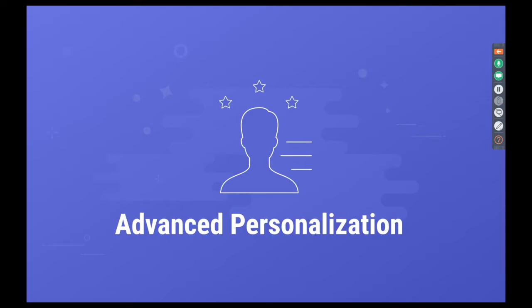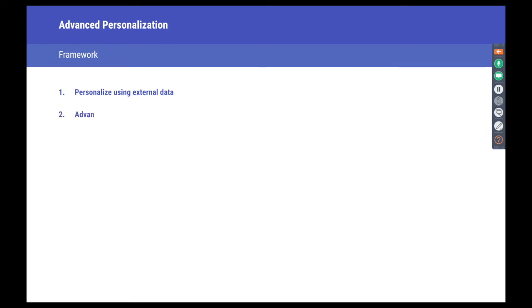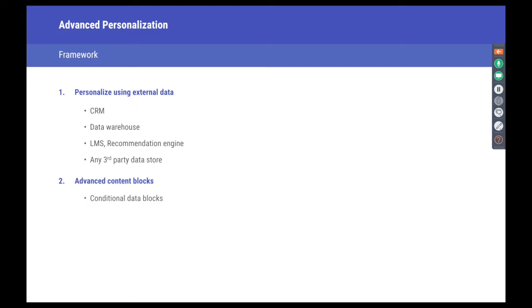What we also offer as the next step is personalizing campaigns in real time on the basis of data we don't even have stored — personalizing using external data. If you've got data in your CRM, data warehouse, LMS, recommendation engine, or any third-party data source, you can pull it into WebEngage just in time before dispatching a campaign using API-driven personalization. In this section, I'll also cover how to use complicated data structures — like lists of products or conditional data blocks — that come back from these API calls.